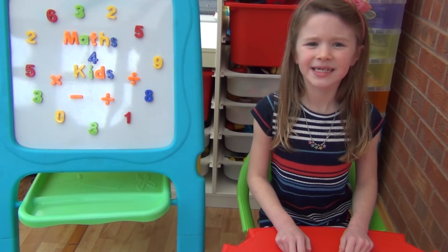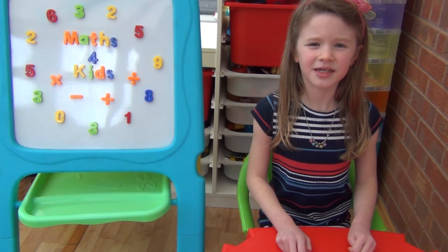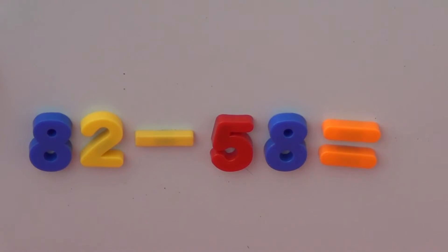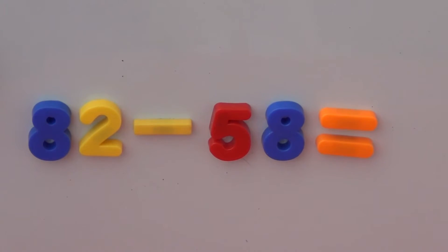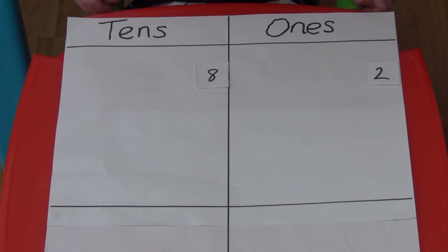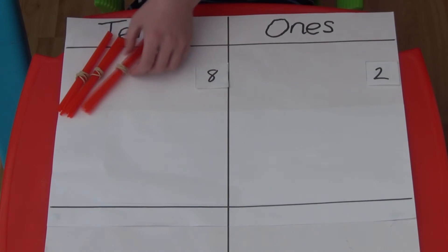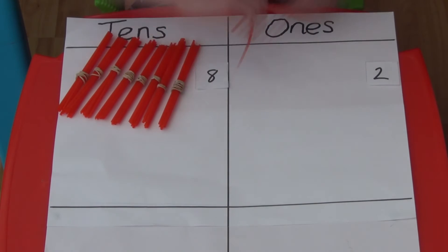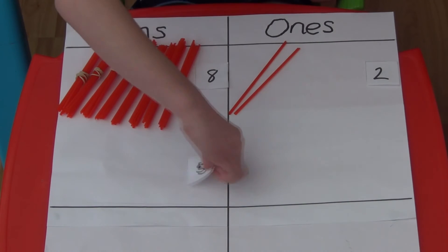Next we're going to see what happens when the second number in the ones column is bigger than the first number. We're going to work out 82 take away 58. For 82 we need 8 bundles of tens and 2 individual straws. And for 58 I'll just stick on the numbers.